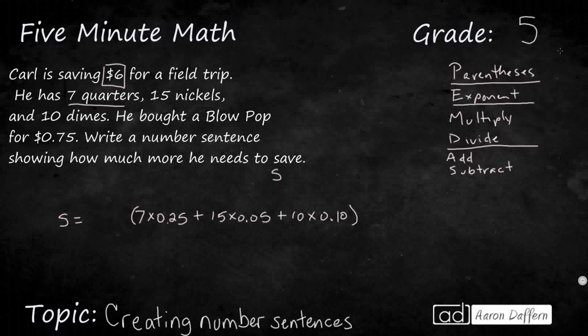So Carl doesn't need to save this amount. He already has this. So if he's trying to get up to $6, let's do that. Let's say $6 is my goal. And I'm going to subtract this amount here because I don't need to save it. So whatever's going to be left is going to be how much he needs to save. And that would be pretty simple, except that Carl bought a blow pop. So what do we need to do with that blow pop?